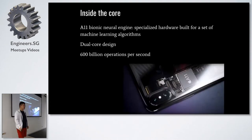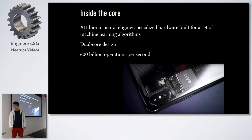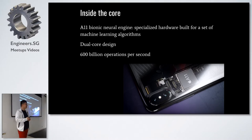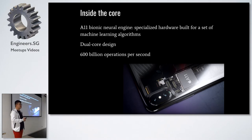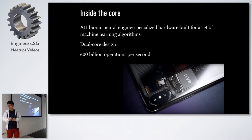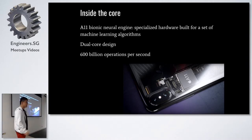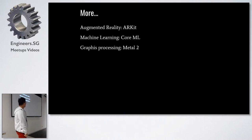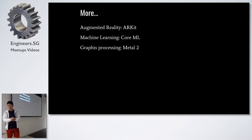Behind the scenes, at the core, is the new A11 Neural Engine. It's a dedicated piece of hardware to run specific machine learning algorithms, making it quite powerful for machine learning. It features a dual-core design and 600 million operations per second operating speed. With that, we are able to do more with SDKs.